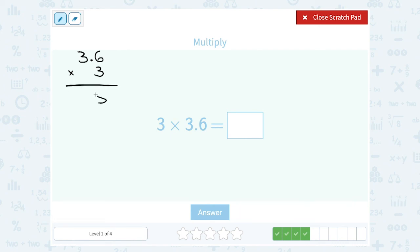3 times 6 gives me 18. So I'm going to write 8 and carry the 1. 3 times 3 gives me 9, plus the extra 1 makes it 10. Now notice there was one digit after my decimal point here, so I need to make sure to put one digit after my decimal point in my answer. So 10.8.